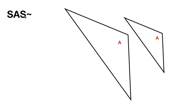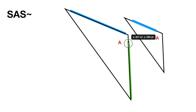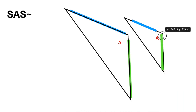Side-angle-side similarity says that if one pair of sides is proportional to the other pair, and we have another pair of sides that are proportional to each other, and the angle in between is congruent, then the two triangles are similar. So if this blue side is twice as long as the original blue side, and this green side is twice as long as the original green side, and the angles A are congruent to each other, then the two triangles are similar.